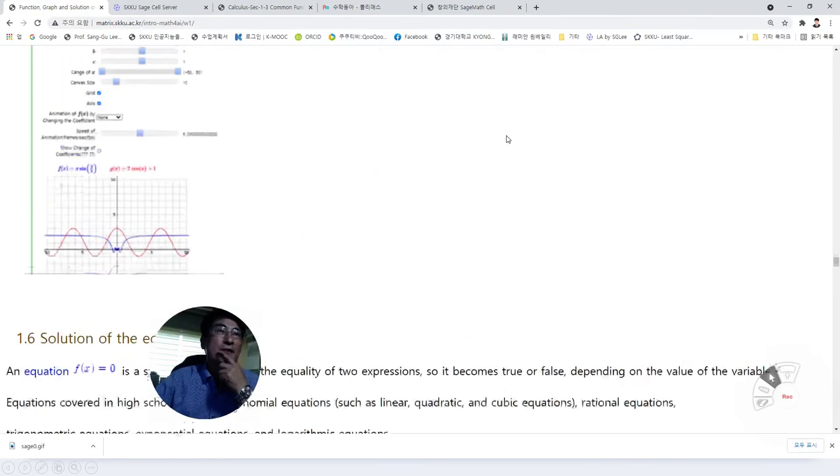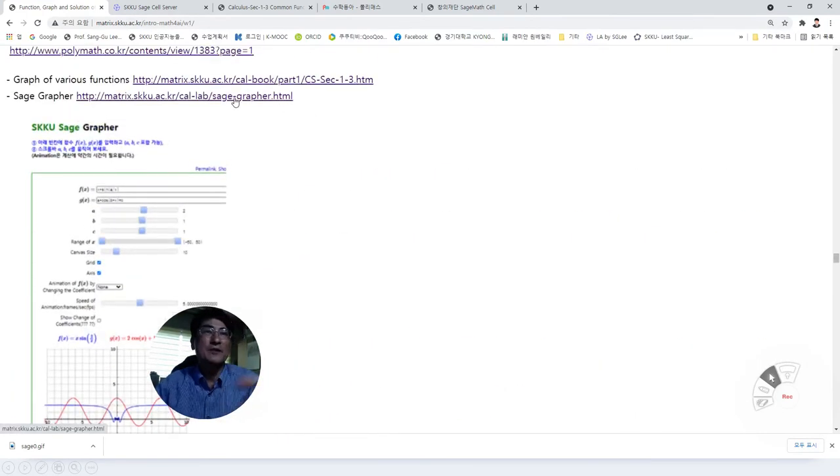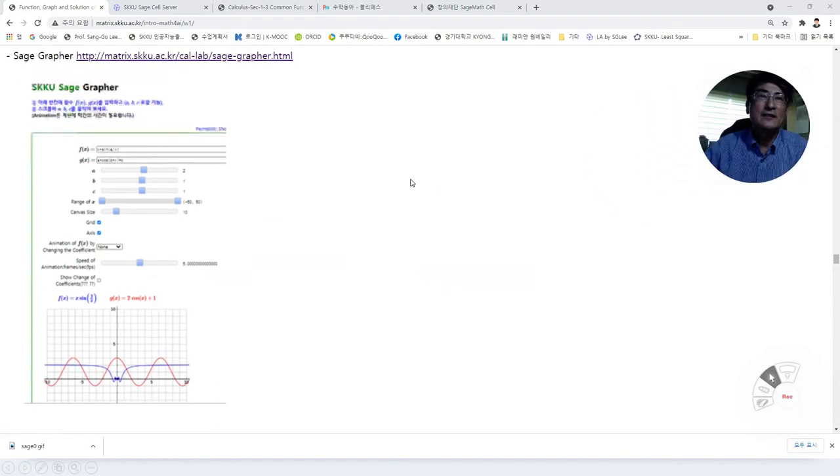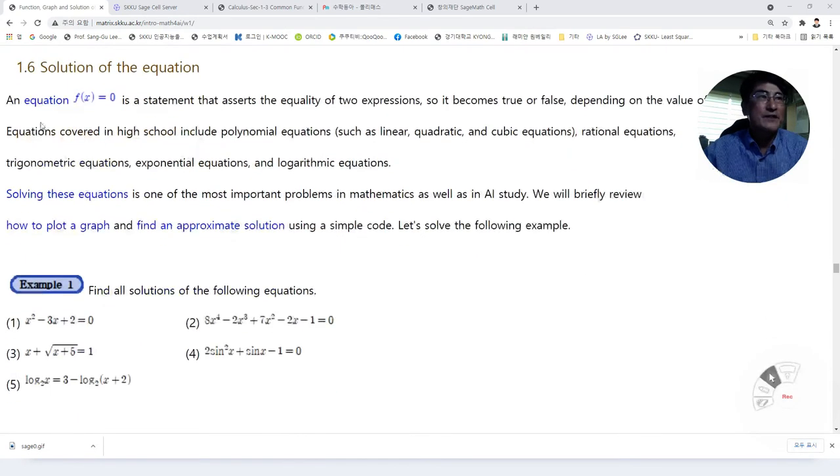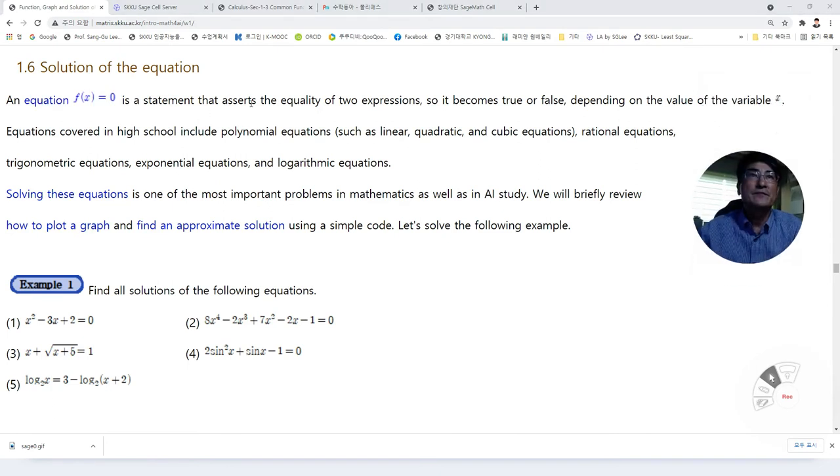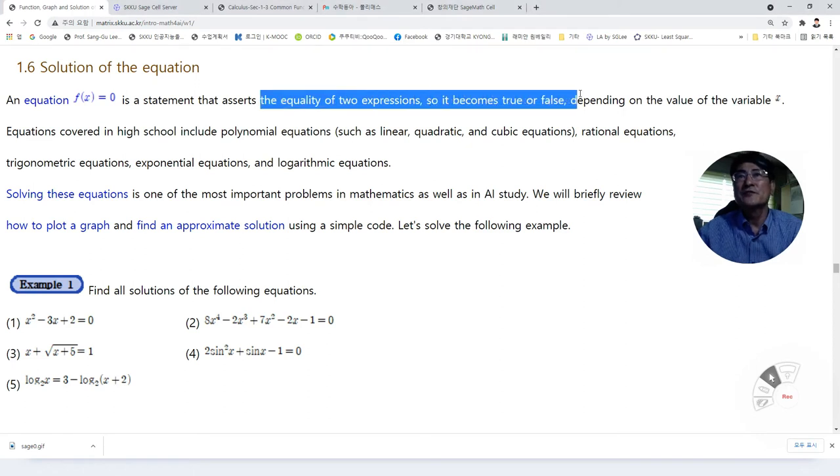Here, we have learned how to draw many different types of functions. The reason that we learned to draw the graph of a function is to find the solution of equations. An equation f of x is equal to zero is a statement that asserts the equality of two expressions. So it becomes true or false depending on the value of the variable x.